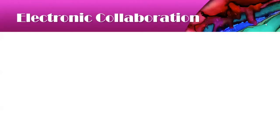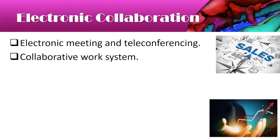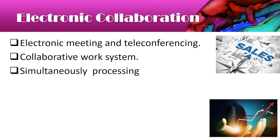Electronic collaboration includes electronic meetings and teleconferencing. Collaboration means two or three people working together. It helps us work on a collaborative work system — you can process or work on a file simultaneously, and two people can make changes to files. All this is possible in various automation programs that are available.